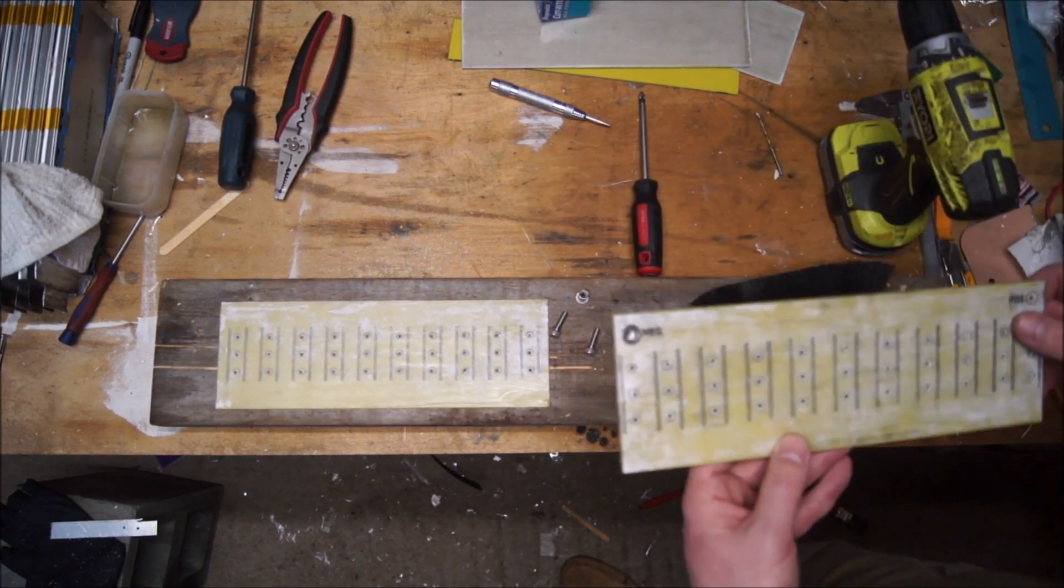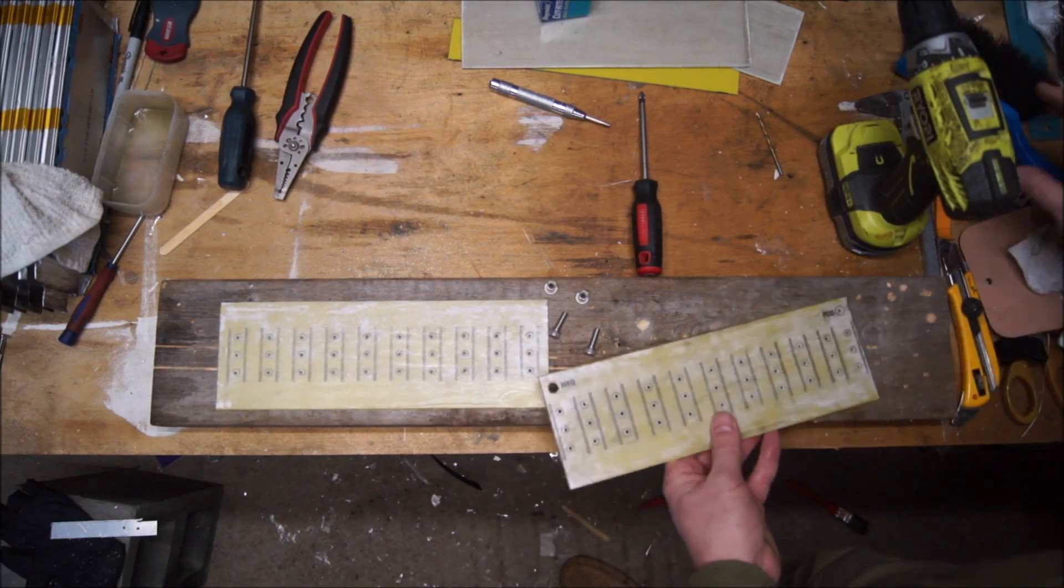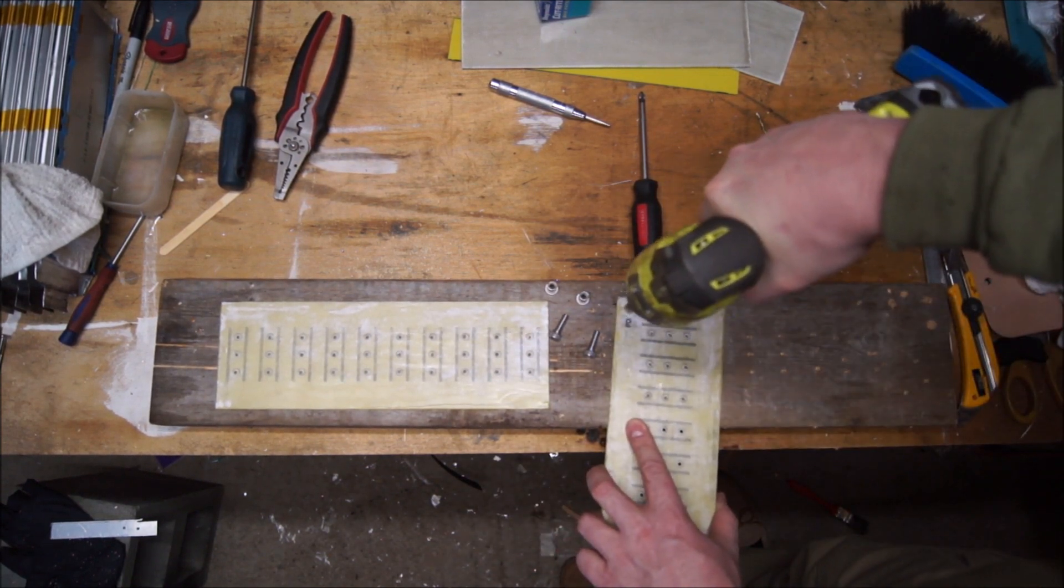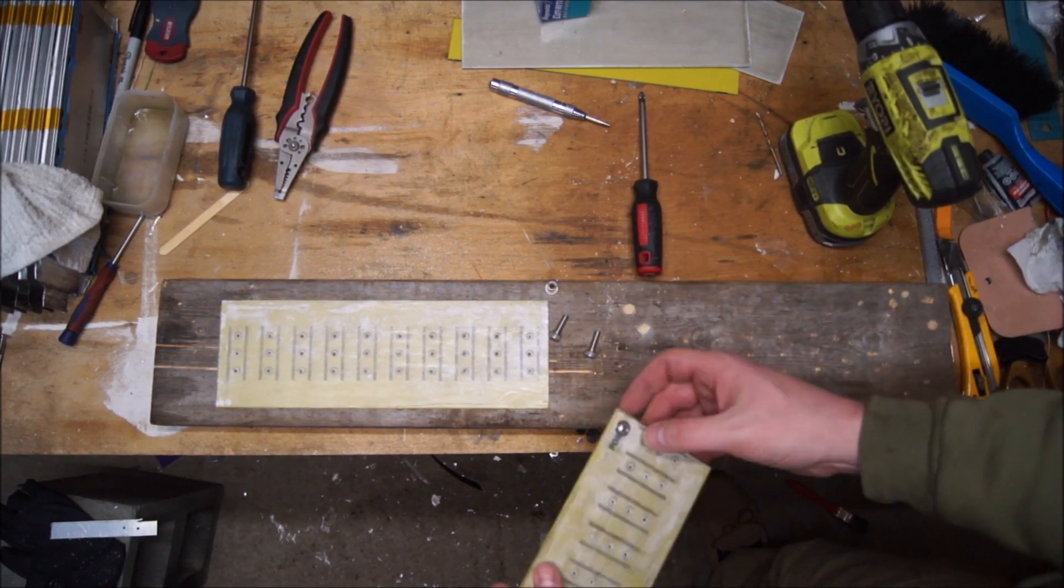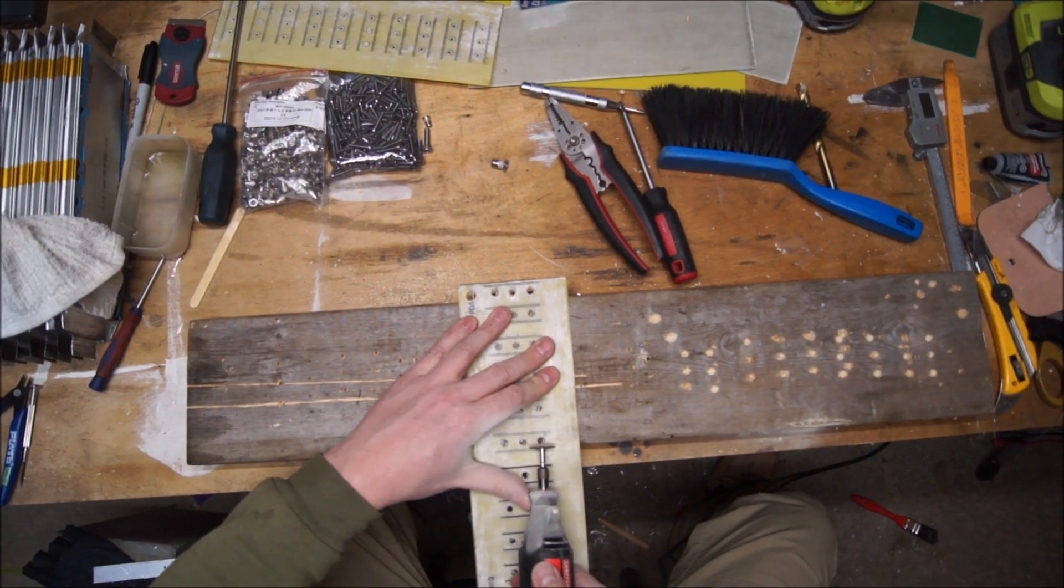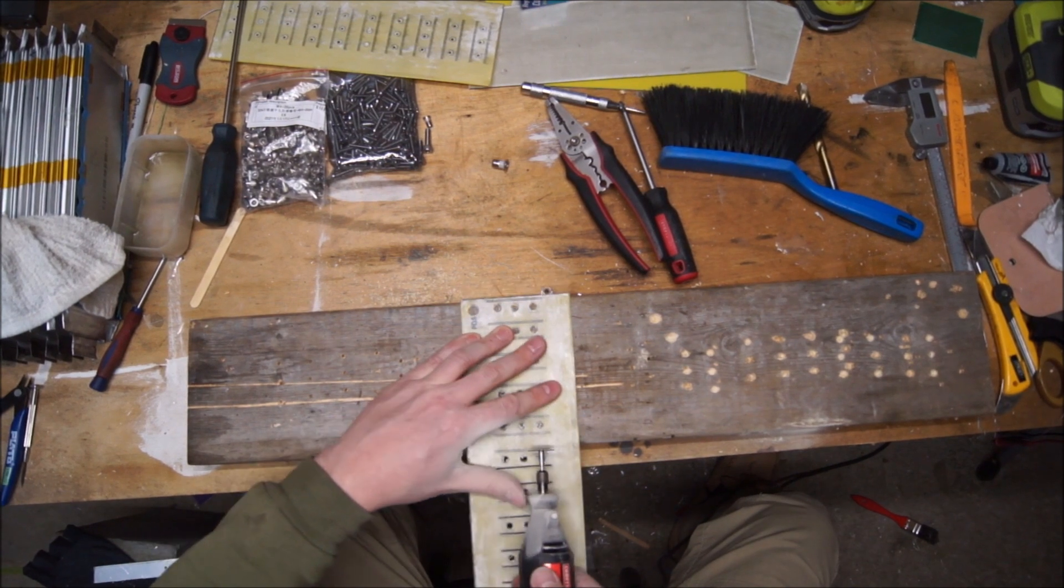My plan is to install rivnuts, and here you can see me checking the drilled holes for size. A rivnut is a kind of captured nut, and it works very well with glass fiber reinforced panels. I have to say, I really prefer the laser cutter to the Dremel.